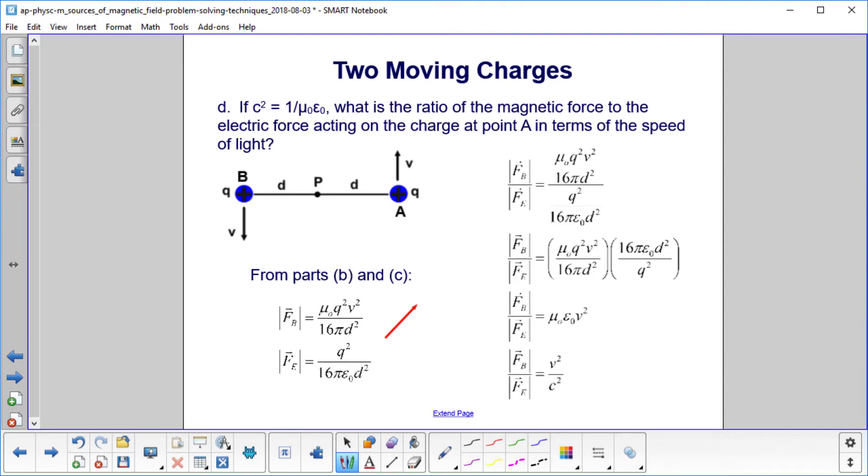If C squared equals one over mu zero epsilon zero, and by the way, we didn't just make that up. This comes out of Maxwell's equations, and was one of the things that showed that light is just another type of electromagnetic radiation.